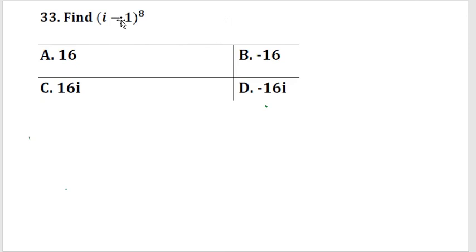The first question here is a complex number. It says: find the value of (i minus one) to the power of eight. Multiplying the given expression eight times is time-consuming, so this kind of complex number problem will be done by simplifying using polar form. We need to change the given complex number into polar form. Once it's changed into polar form, it has its own process. Let us see step by step.